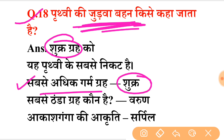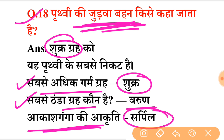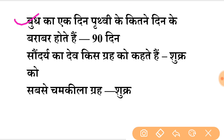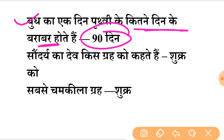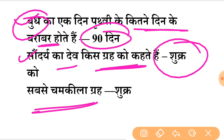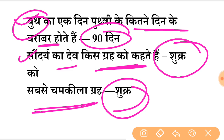The hottest planet is Venus. The coldest planet is Uranus — remember this. The brightest planet is also Venus. The shape of the Milky Way galaxy is spiral. One day on Mercury is equal to 90 Earth days. Mercury is the closest planet to the Sun and is also the smallest planet.